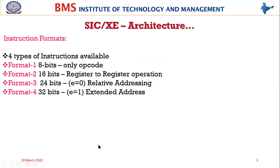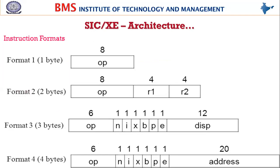Importantly, we discussed that there are four formats of instructions. Format one is 8-bit having only opcode with no operands. Format two has two operands which are registers, so it's a register-to-register operation. Format three is 24 bits, among which six bits is opcode, six bits are flags, and the remaining 12 bits is the displacement. This gives rise to different relative addressing like PC-relative, base-relative, immediate, and indirect addresses.